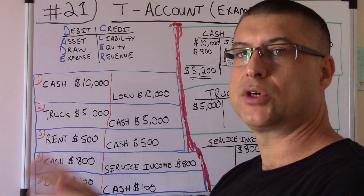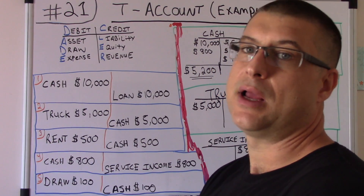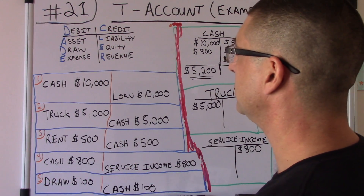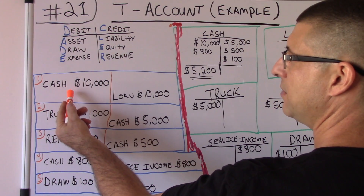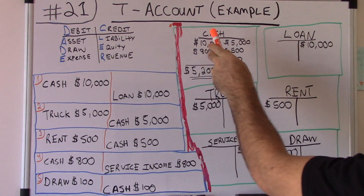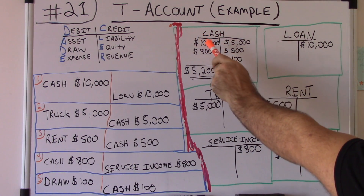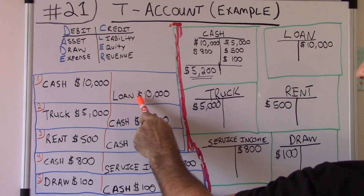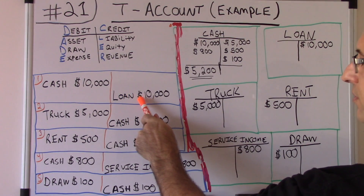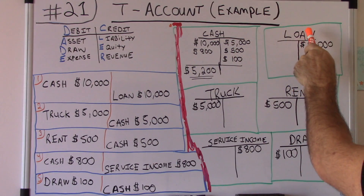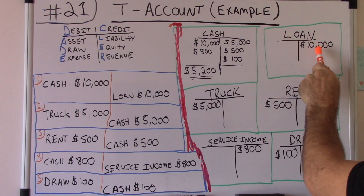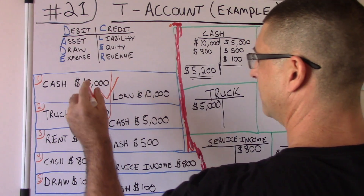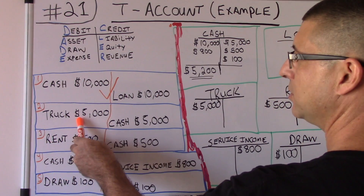We have five journal entries, so let's go step by step. Debit is on the left, credit is on the right, and they always equal. First journal entry: cash debit 10,000 — we go to the cash account, debit for 10,000. For the credit, we have loan for 10,000 — we go to the loan account and enter a credit for 10,000. The first journal entry is done.